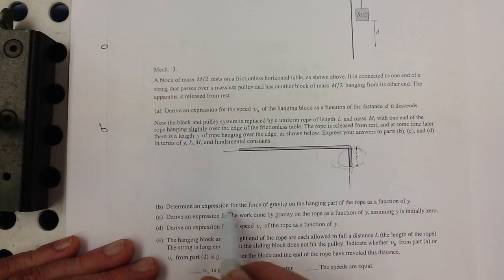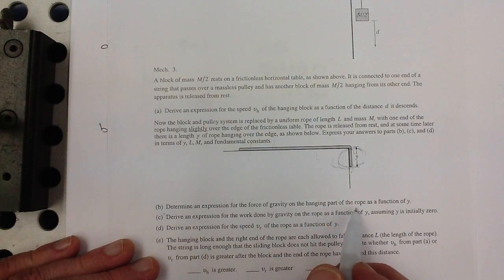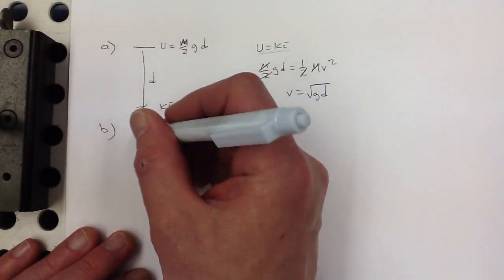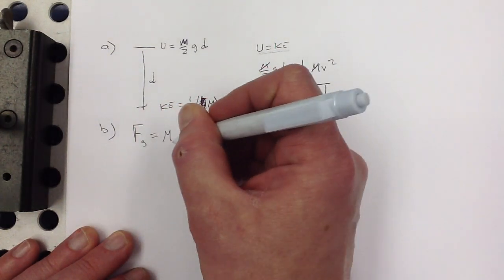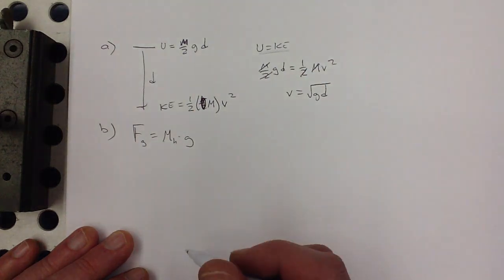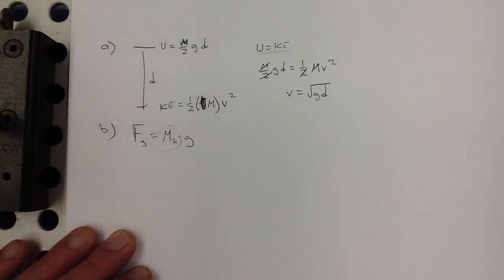So it's just this part that's being pulled on by gravity that's actually accelerating it down. They want us to determine an expression for the force of gravity on the hanging part of the rope as a function of y. Well, the force of gravity is equal to the mass, I'm going to call it the mass of the hanging part times gravity, right? So I need an expression for this.